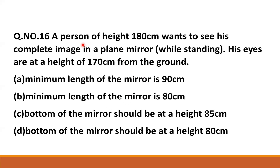Next question: a person of height 180 centimeters wants to see his complete image in a plane mirror while standing. His eyes are at a height of 170 centimeters from the ground. Since the eye height is 170, the lower edge of the mirror must be at half of that — 85 centimeters. So the bottom of the mirror should be at height 85. The minimum length of the mirror should be half of his height, which is 90 centimeters.